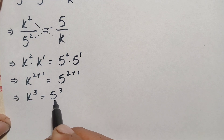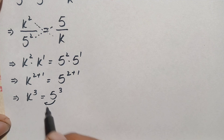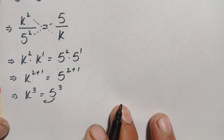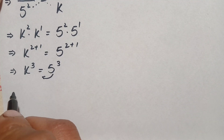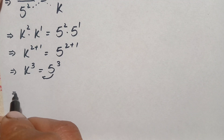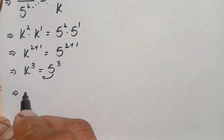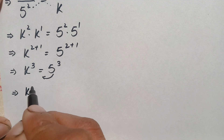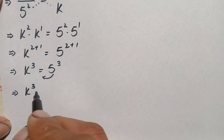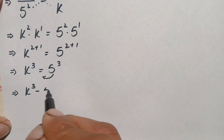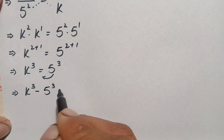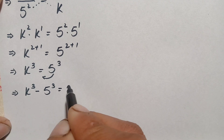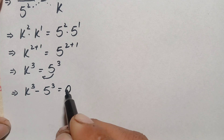Now we will move the 5 cubed to the left hand side, so it will become negative, and this equation becomes k cubed minus 5 cubed is equal to 0.